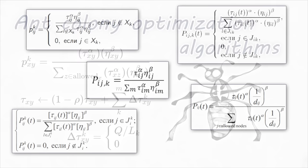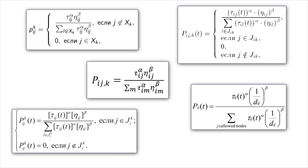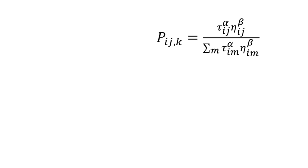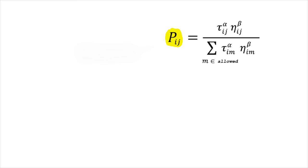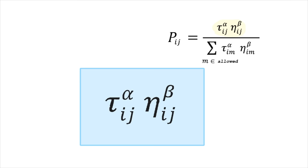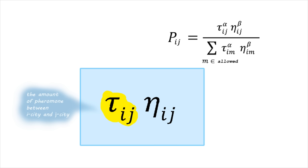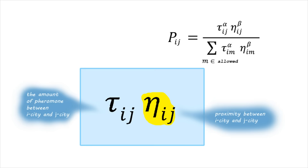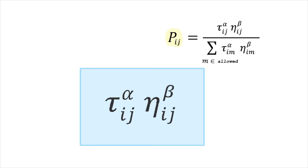Now we will analyze the classic ant colony optimization algorithm. The first formula is the probability of an ant moving from one city to another. The formula determines the probability that an ant will move from vertex i to vertex j. Alpha and beta are constants selected empirically. The first symbol is the amount of pheromones between city i and city j; the second symbol is the reciprocal of the distance — the proximity. The probability of choosing a city is proportional to its proximity and the amount of pheromones on the way to it.